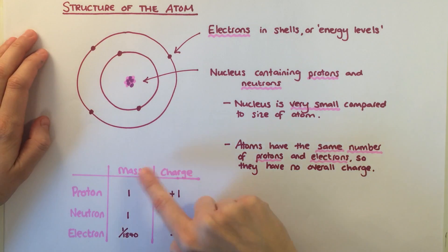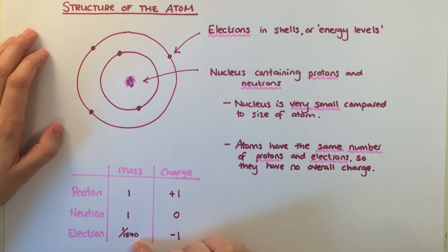You need to know the charge and mass of each of these particles. Protons and neutrons are the same size; we say they have a relative mass of one. Compared to these, electrons are tiny with a relative mass of one thousand eight hundred and forty times less, or almost negligible.